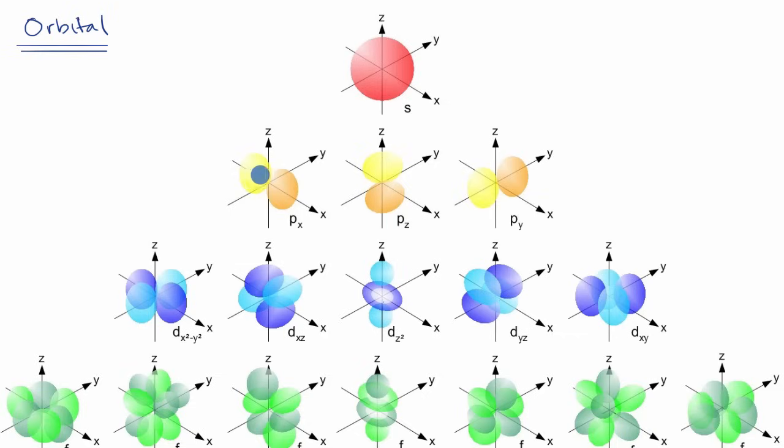Now, each orbital can fit two electrons. So if you're thinking about the subshell, the S subshell can fit two electrons. The P subshell can fit six electrons. The D subshell can fit 10 electrons. And the F subshell can fit 14 electrons, two per orbital.